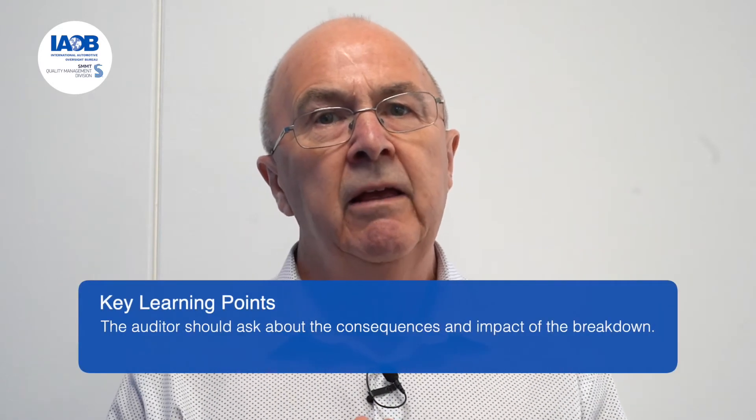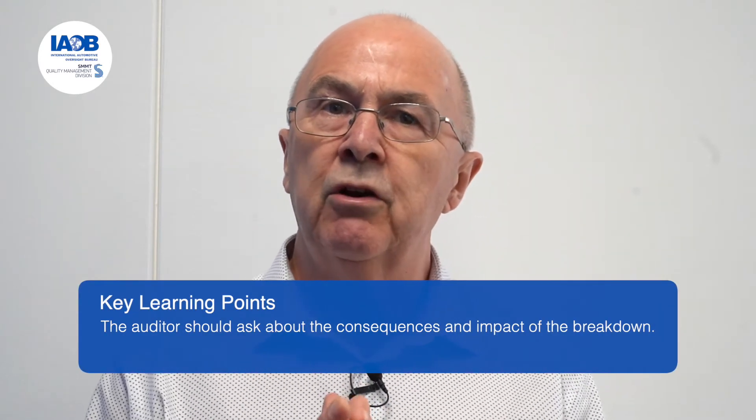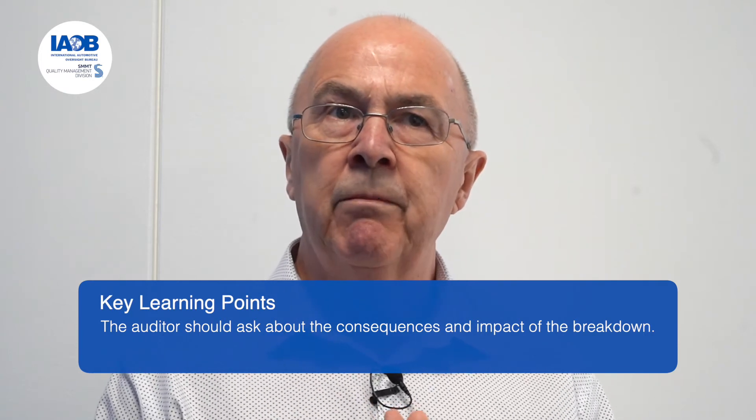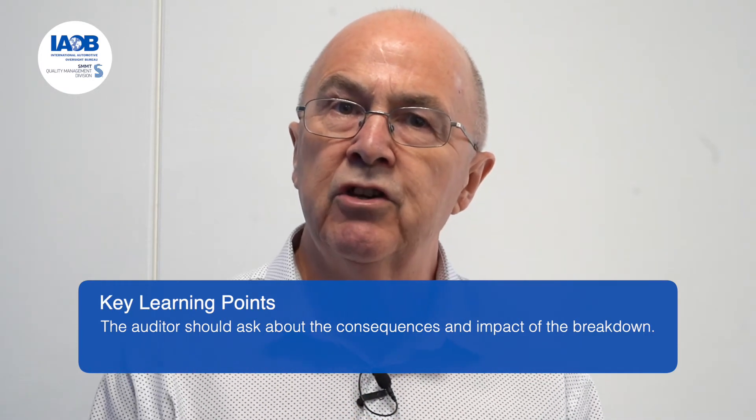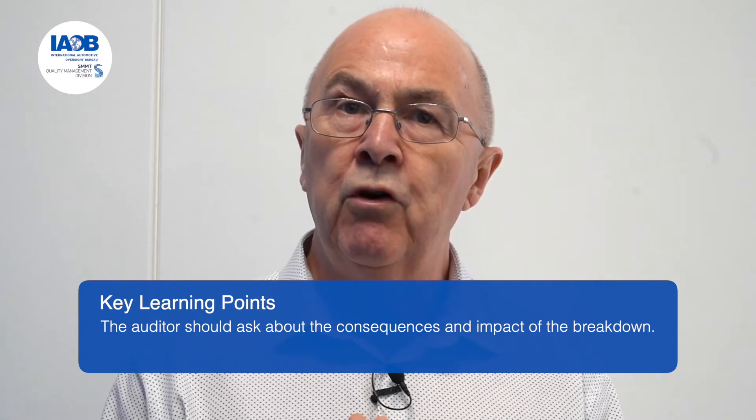The second learning point is that the auditor did ask a good question about the impact of the breakdown. In this case the organization said they were going to move production to a different machine. That itself raises warning bells, and the auditor was right to follow audit trails looking at the change management process, particularly related to customer specific requirements. The auditor could also follow the audit trails to the part approval process to see what machine or range of machines the part approval had been gained through.